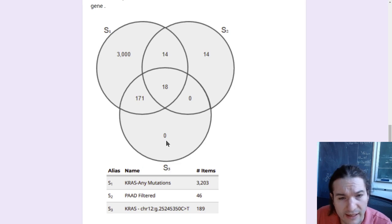This bottom circle, anything it overlaps, is a sample that contains a specific KRAS mutation. And I think it's worth noting that all of the samples contained within it, so 171 plus 18 being 189, all 189 samples also overlap with S1. And if you think about it, well, this is a type of mutation in KRAS. This is all mutations in KRAS. So yeah, they always overlap for samples that contain this mutation. That means the 3000 plus 14, so 3014 samples have a mutation in KRAS, but they don't have this specific mutation.